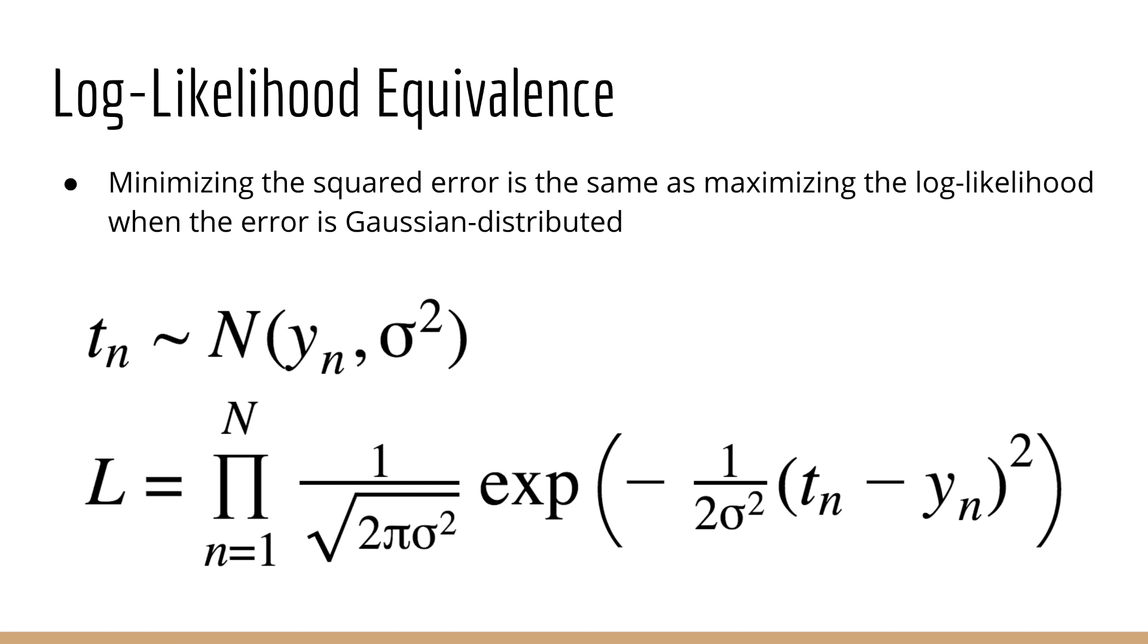As you recall, minimizing the squared error is equivalent to maximizing the log likelihood where the error of our model is Gaussian distributed. Why is that? Let's consider what happens if each target, t of n, is a random variable which is Gaussian distributed with the mean y of n. The variance of the Gaussian is arbitrary, and it doesn't matter as you'll soon see, so we'll just say it's sigma squared.